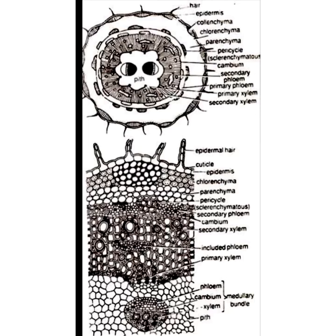The topic of anomalous structure of Achyranthus involves two medullary bundles, which you can see in the figure present within the pith, with their xylem facing each other. They are conjoint, collateral, open, and endarch type vascular bundles. The phloem of these secondary bundles appears in the form of patches and is called included phloem.